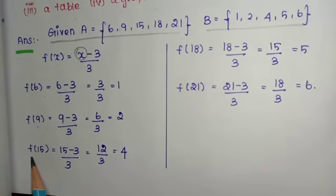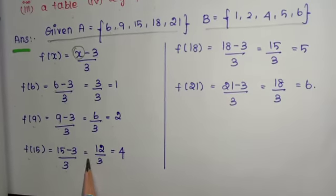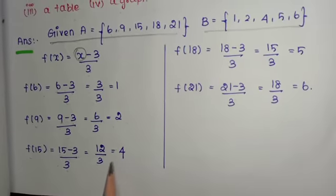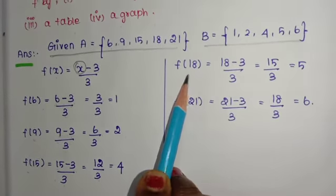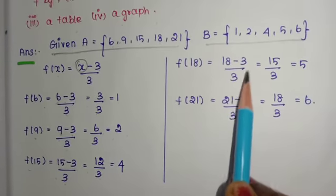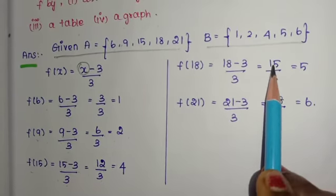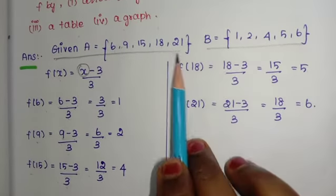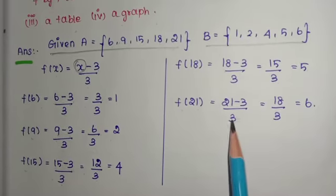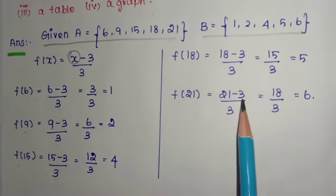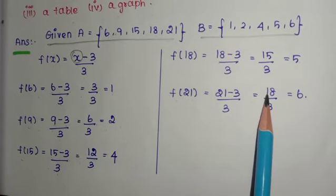F(15) = (15 − 3) / 3 = 12/3 = 4. Then F(18) = (18 − 3) / 3 = 15/3 = 5. Next, F(21) = (21 − 3) / 3 = 18/3 = 6.